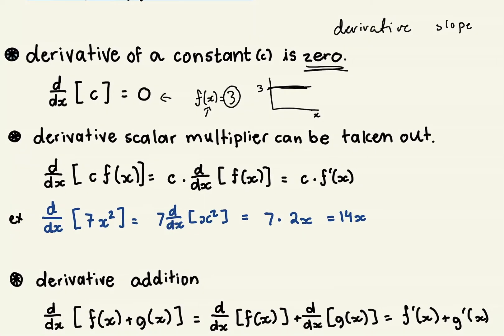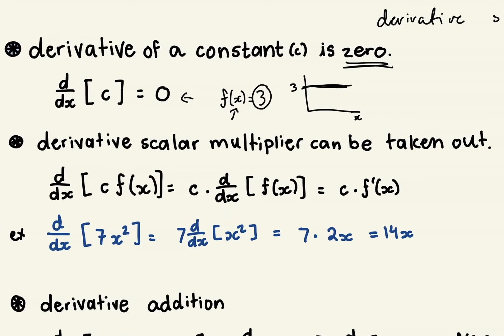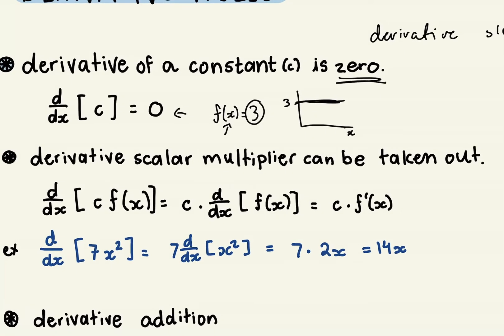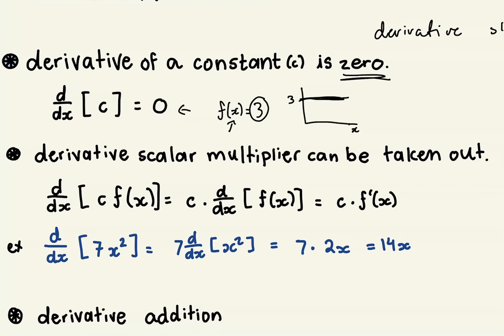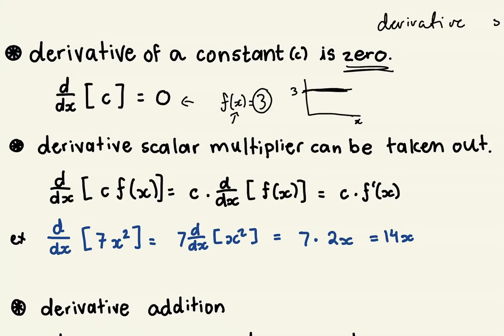The next one is that a derivative scalar multiplier can be taken out. So this one's really just something that a lot of people would just do naturally without even thinking about it, and it could fly by them, but it's good to know.